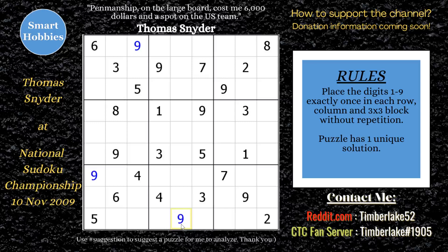Then he starts finding some 3s that he can solve. The first 3 he sees is in row 9, column 3. You'll notice there's a 3 right here and a 3 right here, and there's only one place left for a 3 in block 7 right there in row 9. And then he uses those two 3s to look across and is able to solve row 7, column 9 — not as a 9, but as a 3.